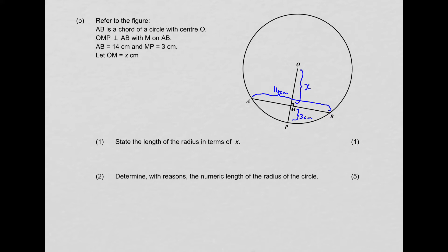They also tell us that OM, from the center to point M, is equal to X. If you write the information on your diagram it helps you with the questions. That also goes for every successive sub-question — as you finish each answer, write your values on the diagram so you have them for the next questions. So question one: state the length of the radius in terms of X. Because OP is a radius, the radius is X plus 3.